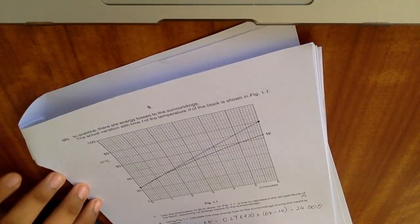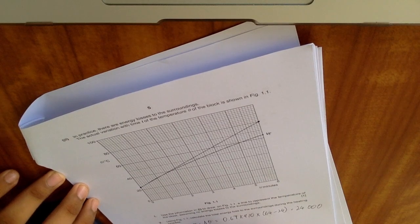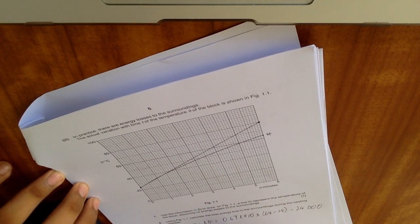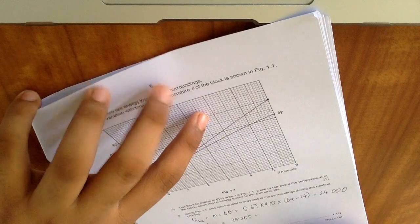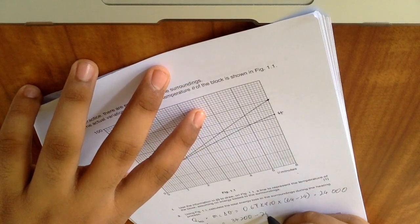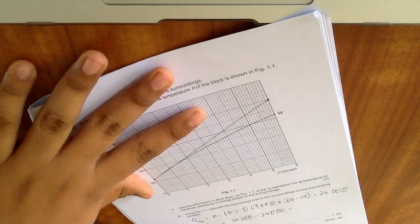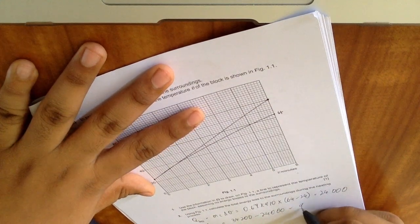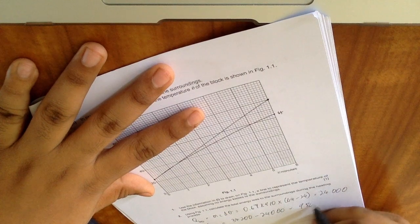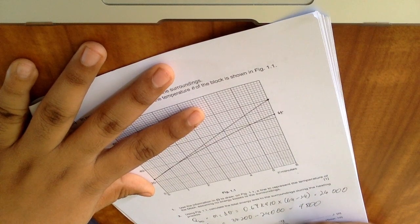Okay, and then heat loss is equal to... here we've seen it as 34,200 is the energy supplied by the heater, minus 24,000. After a quick subtraction, we get 9,800 joules, and that's your answer.